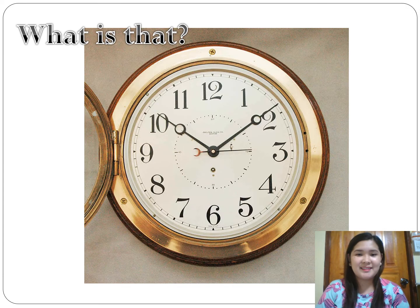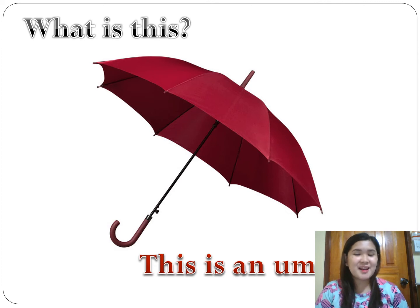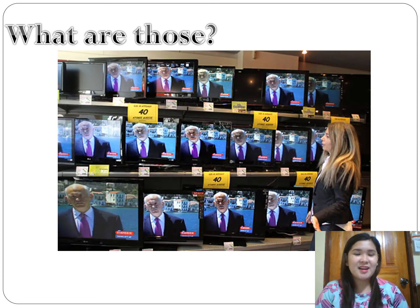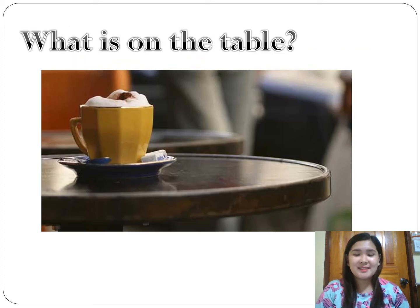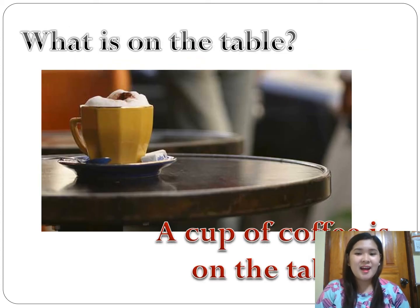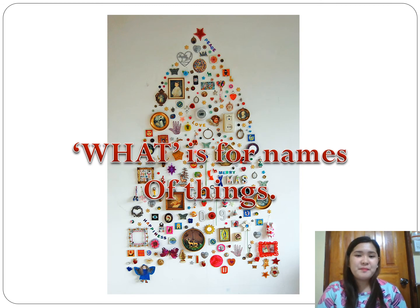Next is 'what.' What is that? It's a clock. What is this? This is an umbrella. What are those? Those are TVs. What is on the table? A cup of coffee is on the table. What is your name? 'What' is for names of things.